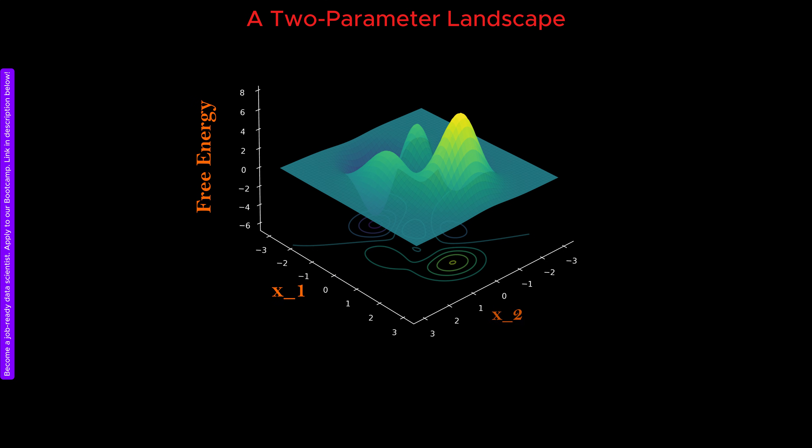In this case, we generate a random function and visualize it in the conventional way using a three-dimensional plot. Since this is still within the limits of what traditional visualization can handle, we can directly compare the conventional landscape with the microscope output.